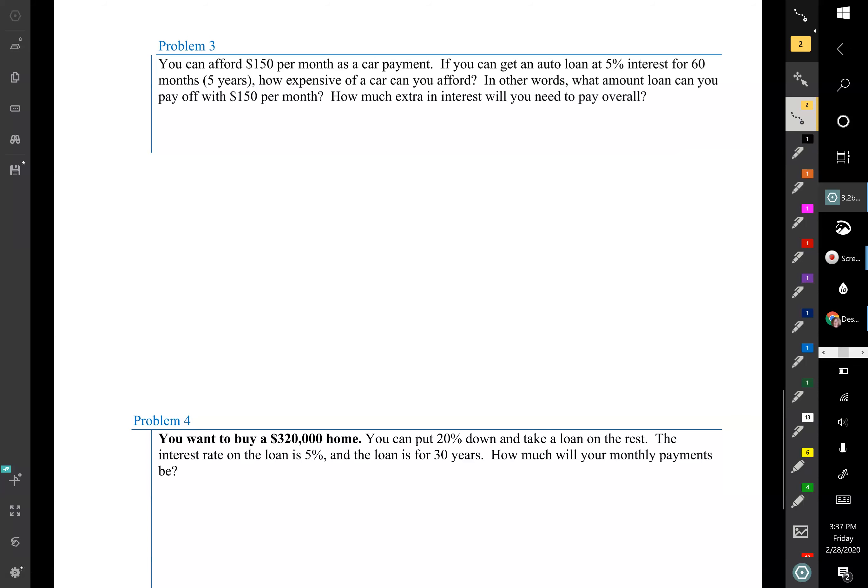You can afford $150 per month as a car payment. If you can get an auto loan at 5% interest for 60 months, which would be five years total, that's given out to the 60 months as k equal to 12 and n equal to 5. How expensive of a car can you afford? In other words, what amount loan can you pay off with $150 per month, and how much extra interest will you need to pay overall? That's always an interesting thing to find out.